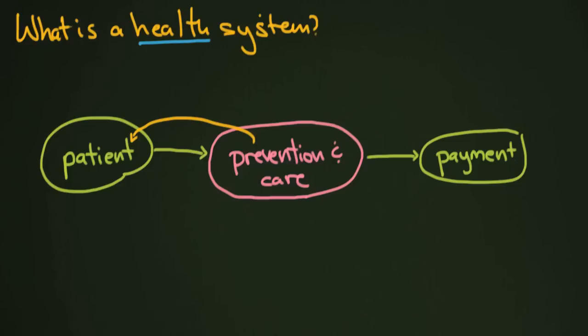But in the modern era, health care has become obviously much more expensive and harder to manage. There are so many different kinds of diseases and things that need to be taken care of, and slowly over time, new players have come in. One of the major players is the government. Governments of different countries have taken different approaches — the United States has never really taken a strong leading role in prevention and care, leaving that to the private sector, whereas countries like England have always taken more of a heavy-handed role in prevention and care for patients.